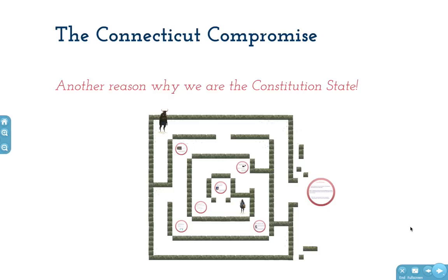This video is called the Connecticut Compromise. In this video we'll be looking at how the issue of representation in Congress was settled, and you'll learn another reason why Connecticut is called the Constitution State, because Connecticut had a lot to do with solving this problem.